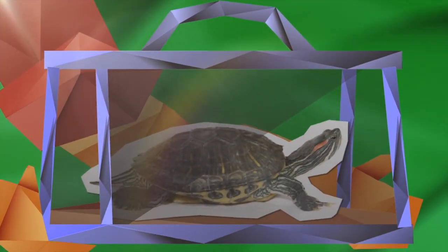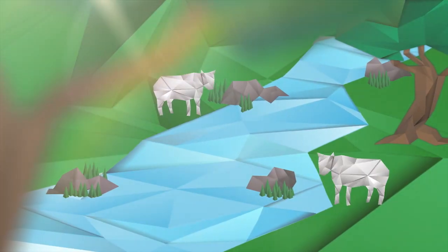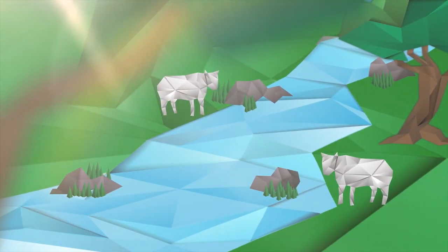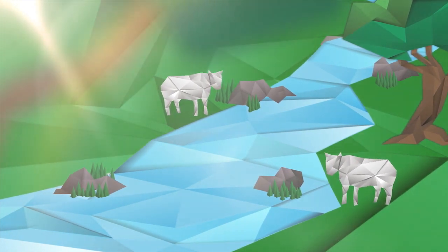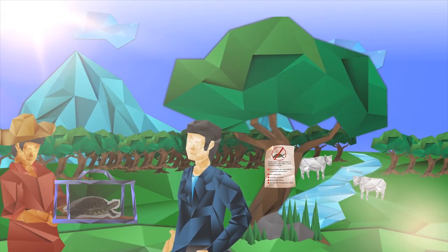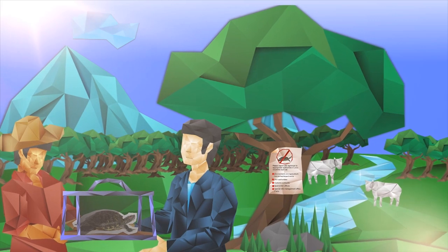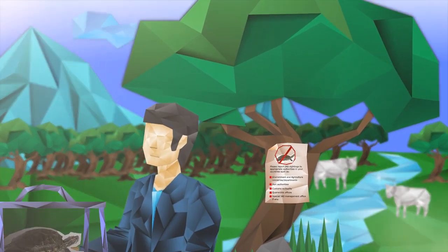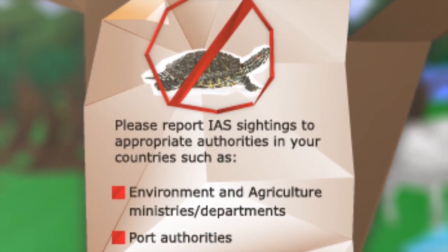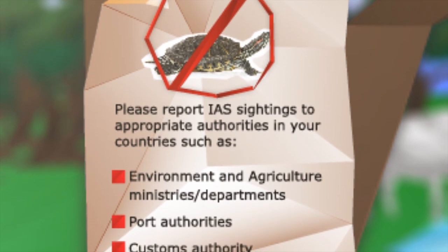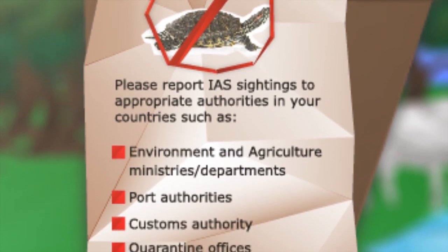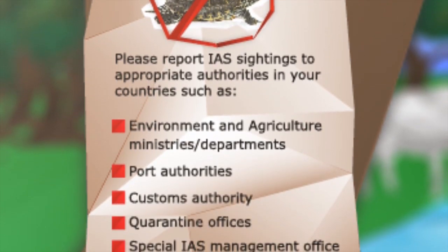Invasive alien species is a silent threat causing serious and irreversible changes in our biodiversity and economy. Take an active stand to protect our native species and habitats now. Report all invasive alien species in your areas to proper authorities and get involved in all invasive alien species prevention activities.